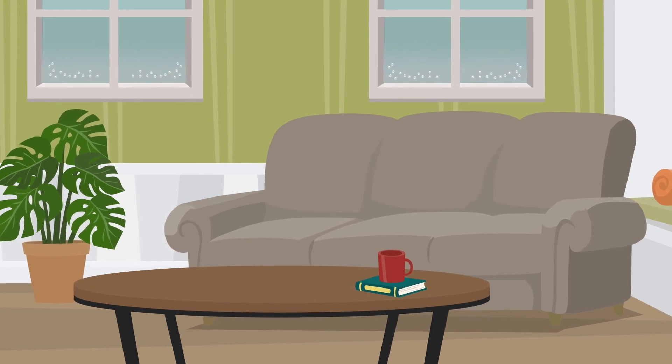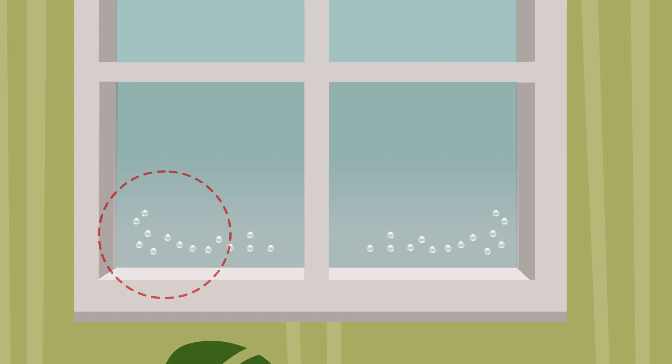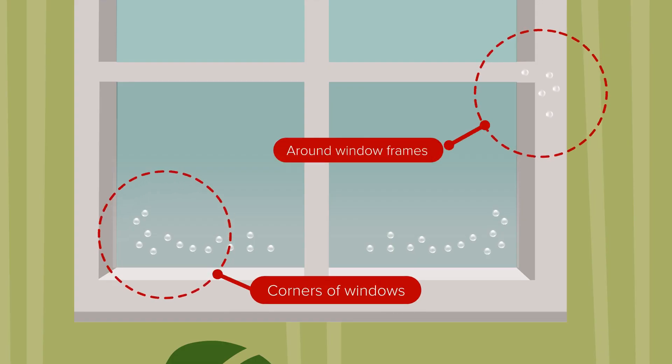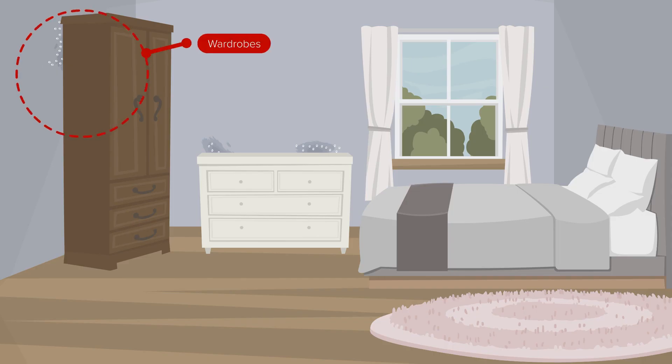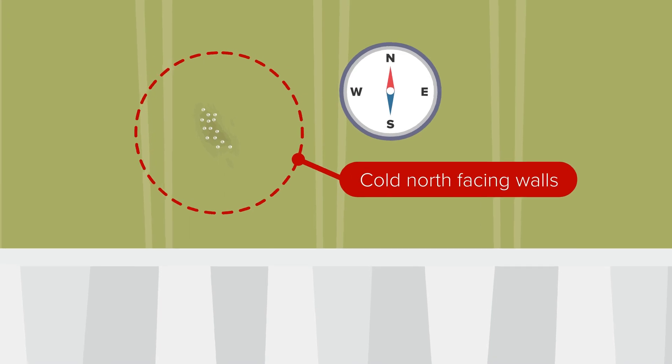This excess moisture will condense on cool surfaces and can often be spotted in the corners of windows or around window frames, in or behind wardrobes and cupboards, and often forms on cold north-facing walls.